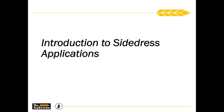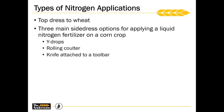We are going to go over some side dress applications. As we move from the planting season into that side dress application season, we don't want to forget about top dressing our wheat. This also plays into some of the conversation we're going to have today as we talk about product placement. The three main side dress options we'll cover are Y-drops, rolling colder carts, and the traditional knife application off of a toolbar.